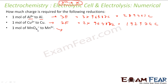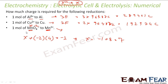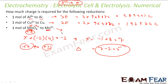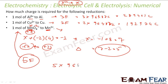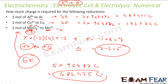For MnO₄⁻ to Mn²⁺: the oxidation number of Mn in MnO₄⁻ is found by solving X + (−2) × 4 = −1, giving X = +7. So Mn goes from +7 to +2, a change of 5. Since there is a 5-electron change, 5F charge is required to reduce 1 mol of MnO₄⁻. That is 5 × 96,487 = 482,435 coulombs.